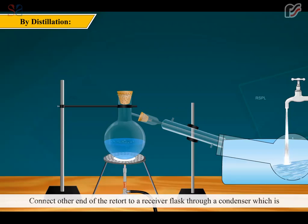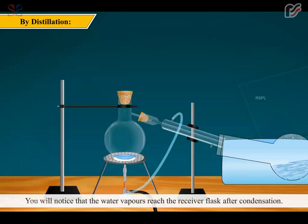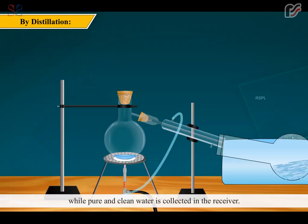Now, heat the round bottom flask. You will notice that the water vapors reach the receiver flask after condensation. Substance left behind in the round bottom flask is only impurities, while pure and clean water is collected in the receiver.